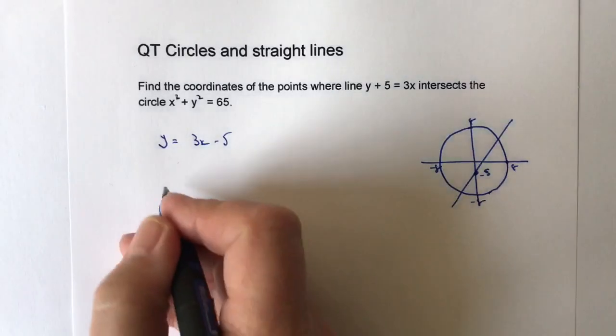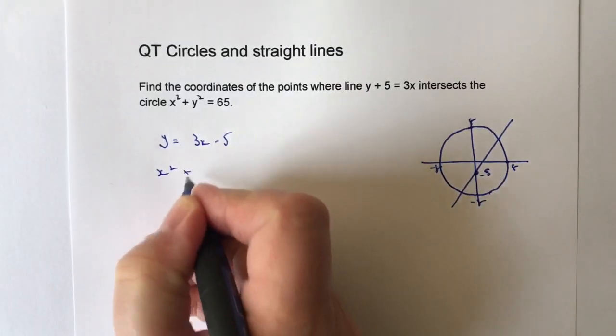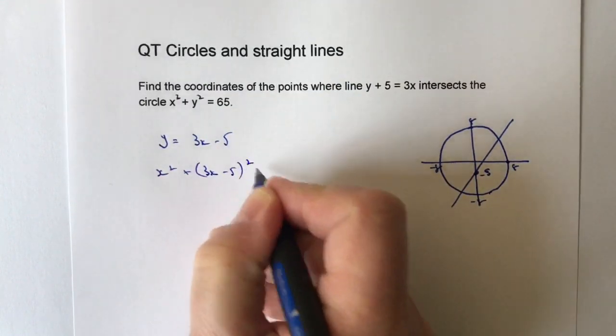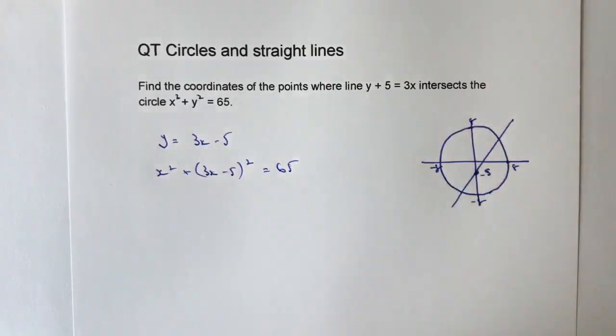So rather than writing x squared plus y squared equals 65, what I'm going to do is I'm going to write x squared plus, and rather than y, I'm going to put 3x minus 5 squared equals 65.